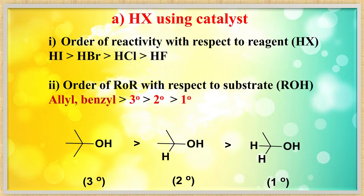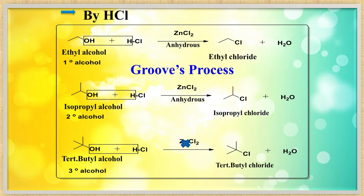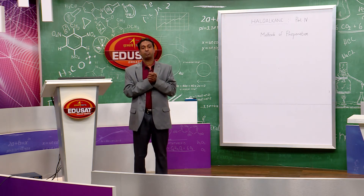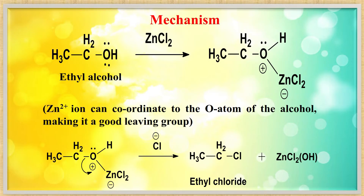Remember, the OH group is not a good leaving group, so removal is not easy. When using HCl for primary or secondary alcohol, you need anhydrous ZnCl2 as catalyst; without it the reaction is very slow. For tertiary alcohol, due to its high reactivity, simply add HCl directly. The preparation using anhydrous ZnCl2 and HCl is called the Lucas process; the product is alkyl chloride.